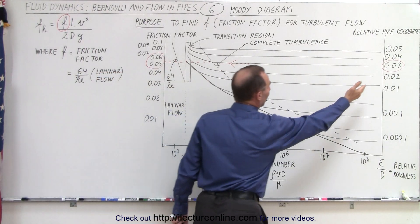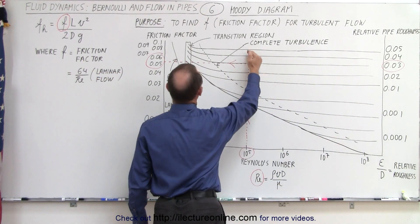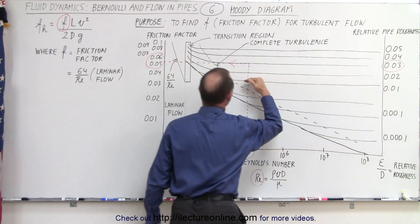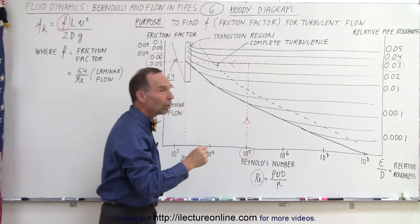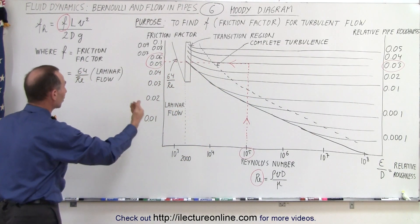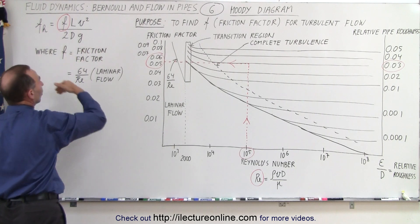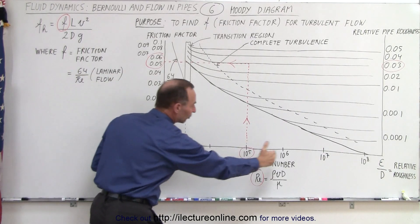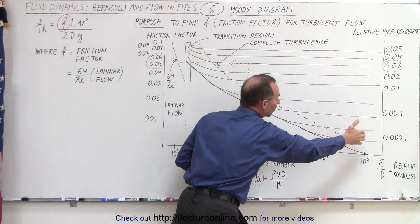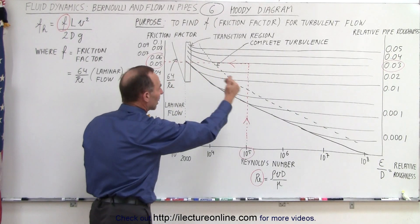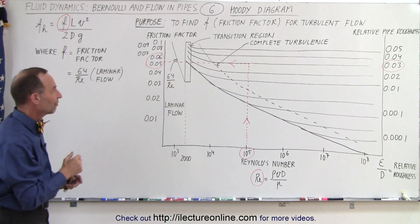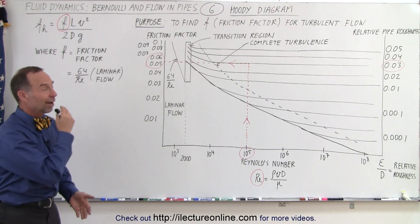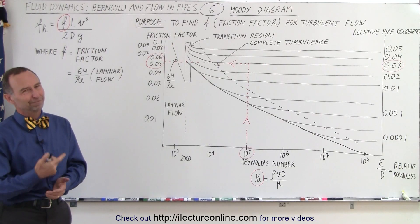Notice that if the relative roughness of the pipe is greater, we would expect a greater friction factor. If the relative roughness is not as big, we expect a smaller friction factor. A smaller friction factor gives you a smaller head loss, and a greater friction factor gives you a greater head loss. It all depends on the Reynolds number and the relative pipe roughness. On a Moody diagram, we're able to find the corresponding friction factor necessary to calculate the head loss — and that's why we need a Moody diagram.